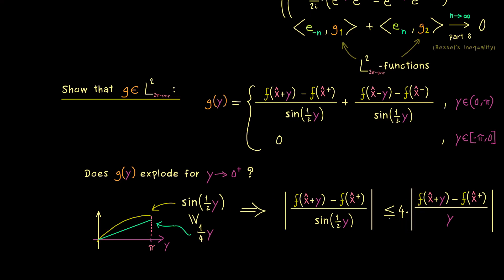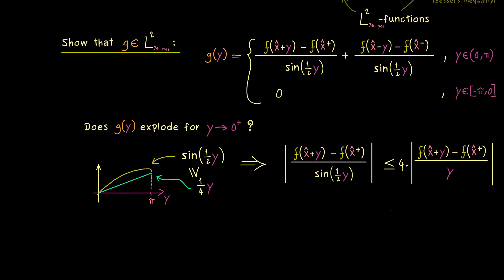And that's already it because now we can send y to 0 on the right hand side. And there you see inside the absolute value we have the slope of f at x hat when we come from the right hand side. Hence the result here is 4 times this constant that exists and we can call it c plus. Indeed it does not matter what the constant actually is because we just want that the function does not explode. And it does not explode because we reach a finite value here.